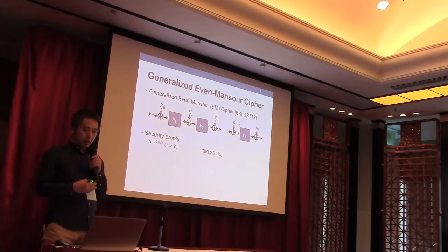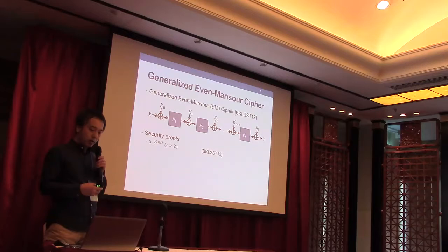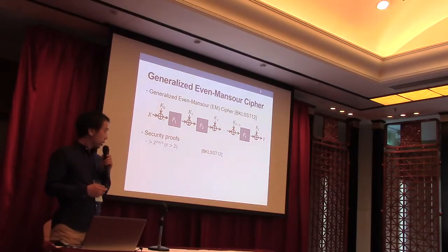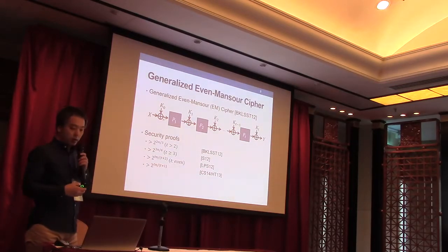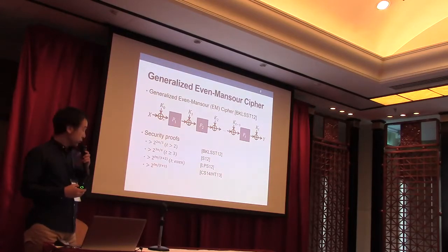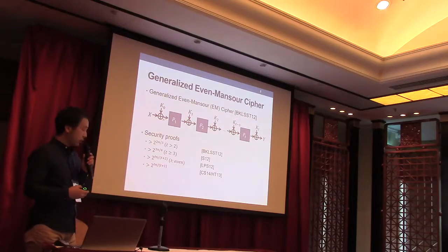After the original result, several follow-up works regarding dual security have been published. Finally, the r-round Even-Mansour Cipher is secure up to 2 to the 2rn over r plus 1 queries against distinguishing attacks.